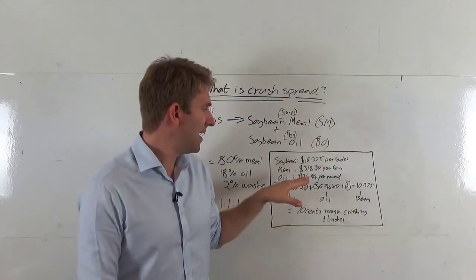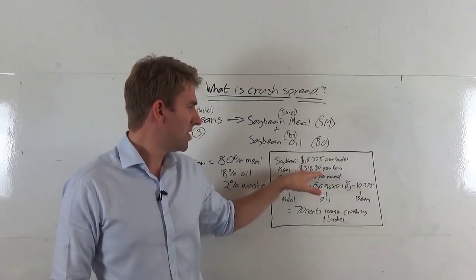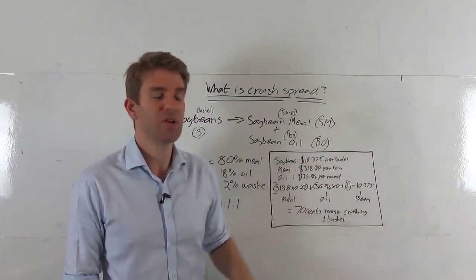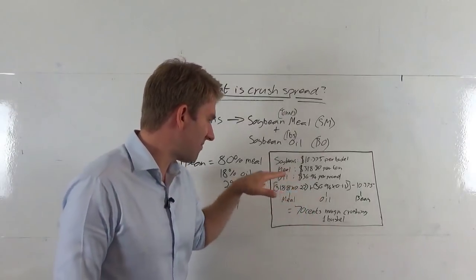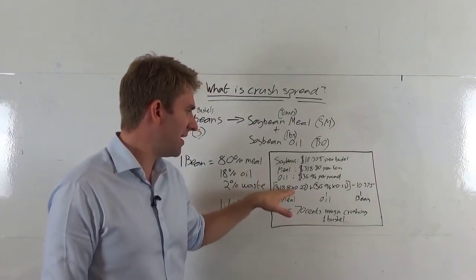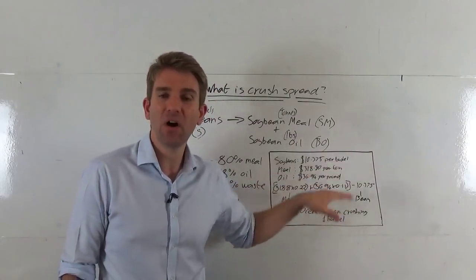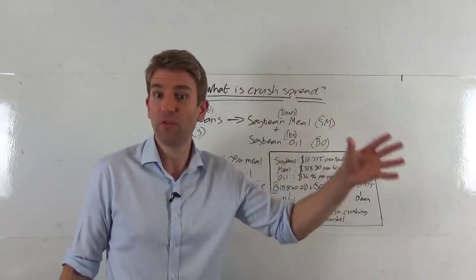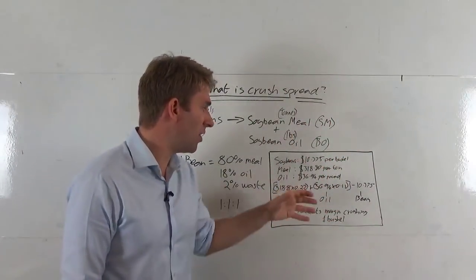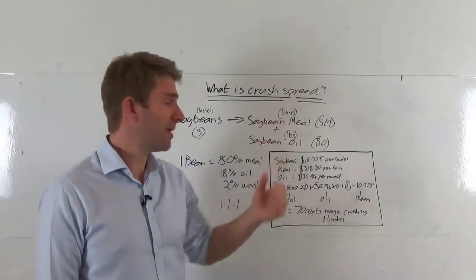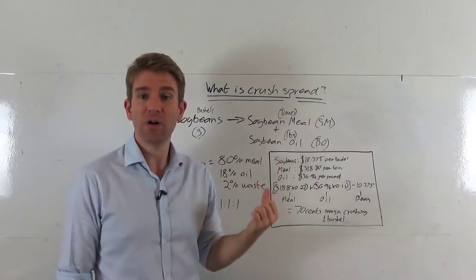You can see how if, for example, soybean meal suddenly went up to $400 per ton, that would increase this part of it significantly and so we'd be making far more margin because we're getting far more for the meal part of it. Same with the oil. If the oil increases dramatically, we're going to be making good margin on that.